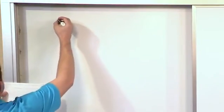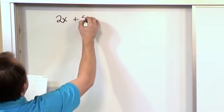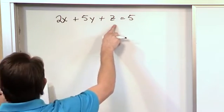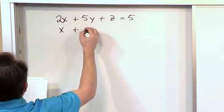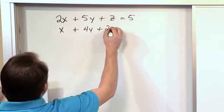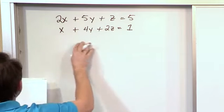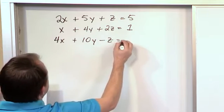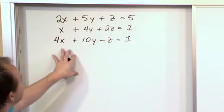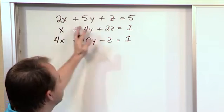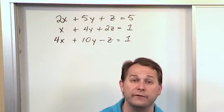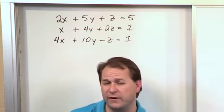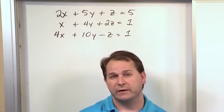Let's talk about a system of equations. Here might be a system: 2x plus 5y plus z is equal to 5. This is one equation with three variables. My second equation might be x plus 4y plus 2z is equal to 1. You should all know by now that this is three equations and three unknowns. In order to have a hope of solving this for a unique x, y, and z, you have to have the same number of equations as you do unknowns.